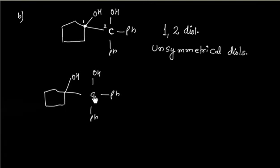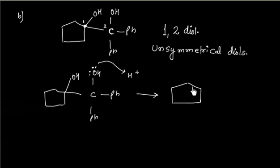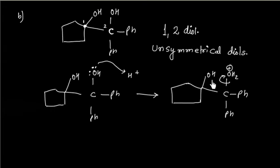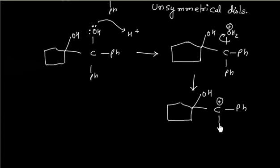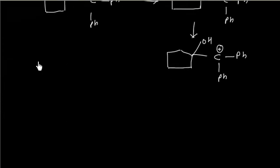In the case of an unsymmetrical diol, we make the carbocation that is more stable. So the first step is forming the more stable carbocation. If we lose H₂O from the carbon bearing 2 phenyl groups, we will have a carbocation that is resonance-stabilized by 2 phenyl groups. The first step is an acid–base reaction; we get C(Ph₂) with OH₂⁺, then lose one water molecule, giving a carbocation at that carbon with OH on the adjacent carbon.